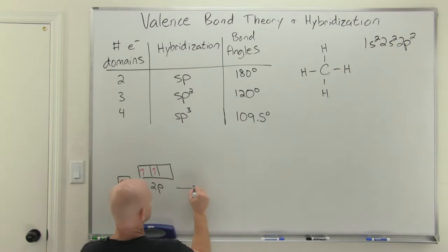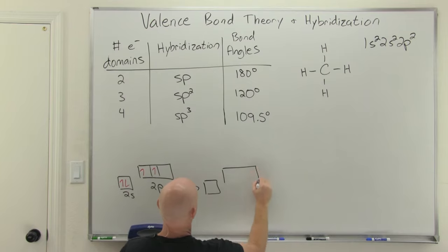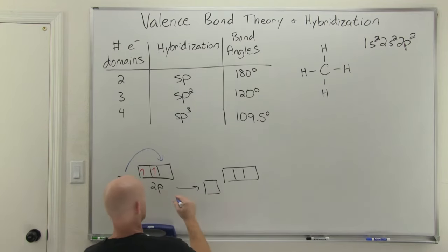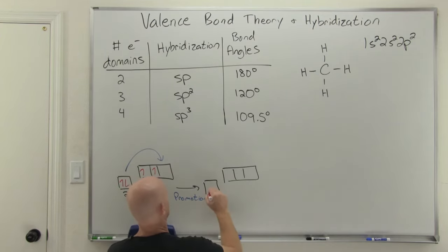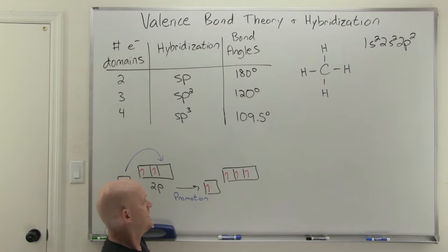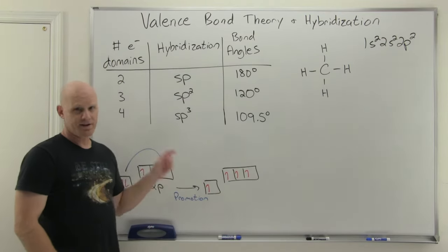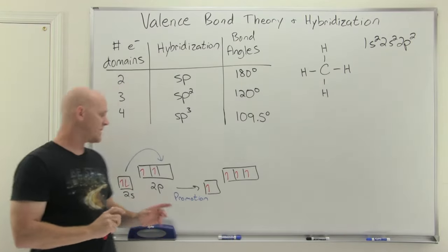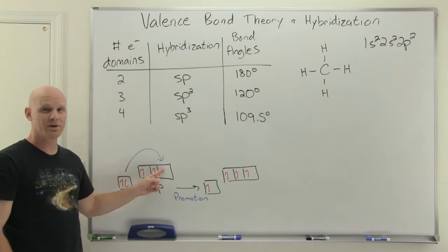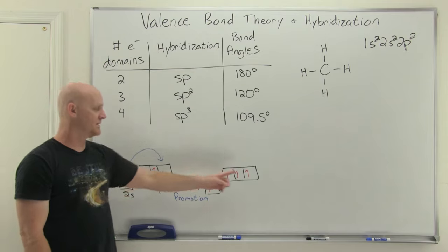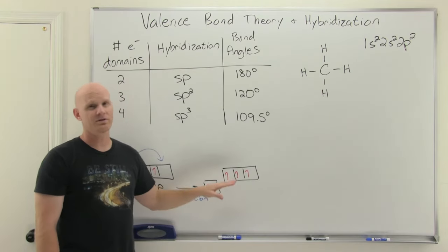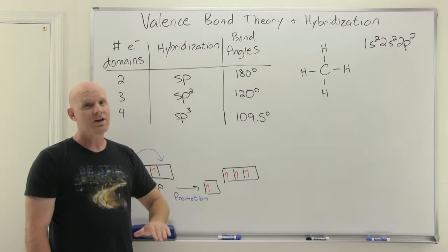The solution is that carbon promotes one of its 2s electrons up into an empty p orbital — we call this promotion. The result is carbon now has four unpaired electrons and can make four bonds. You might wonder why an electron would go to a higher energy orbital. It's an investment: by making two additional bonds, there will be a significant lowering of the electrons' energy in the molecule, making it a much more stable arrangement.